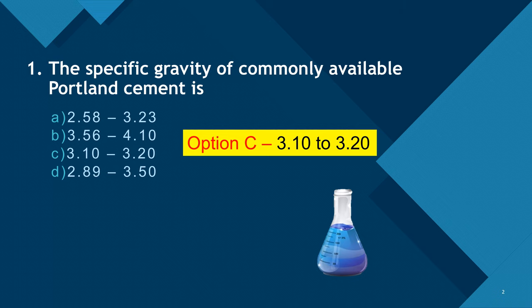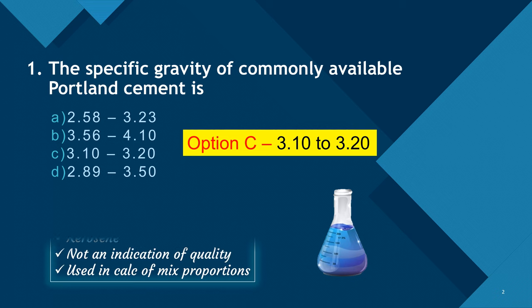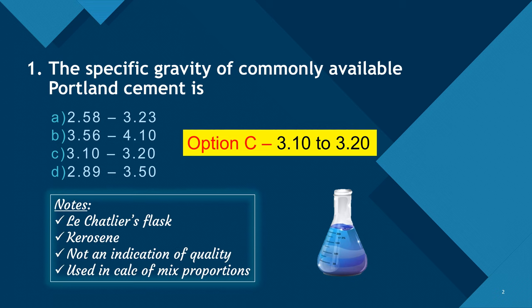The specific gravity is found by using Lee Chatelier's flask, and the fluid used is kerosene, because if we use water the cement will get clogged. Specific gravity is not an indication of quality; this value is used in calculation of mix proportions.